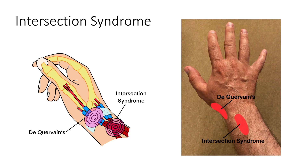Worth mentioning the sister condition to de Quervain's: Intersection Syndrome. This is very similar but symptoms are a little further into the forearm rather than over the radial styloid region. It's where the first extensor compartment tendons — APL and EPB — cross over the second extensor compartment tendons, which are extensor carpi radialis brevis and longus. Rather than tendons rubbing against a fibrous tunnel as in de Quervain's, it's one group of tendons rubbing against an underlying group — that's Intersection Syndrome.